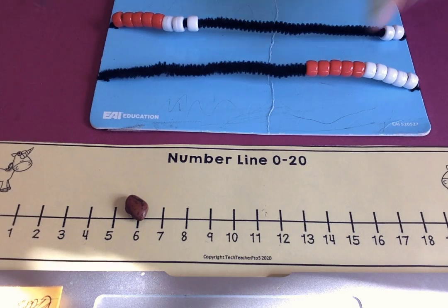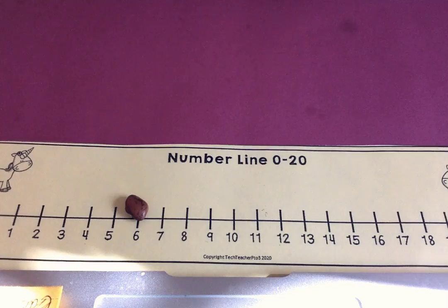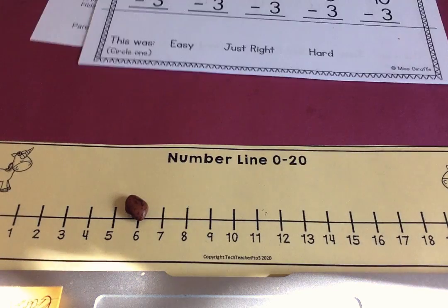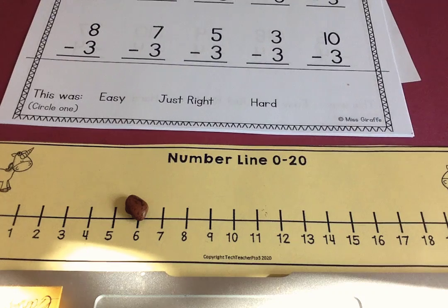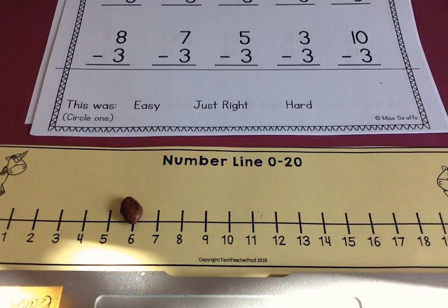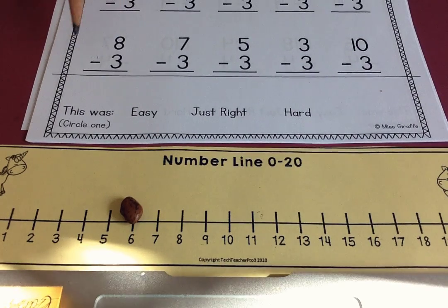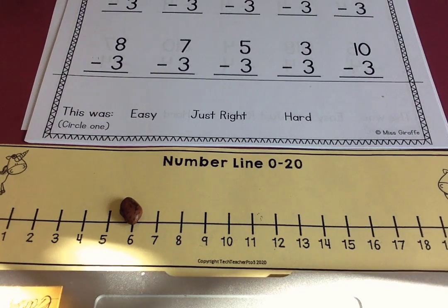Number lines are a tool. Today, you have a lot of subtraction questions. Lots of subtraction questions. You need to pay attention because this is takeaway. It means we're getting smaller. We're not adding.